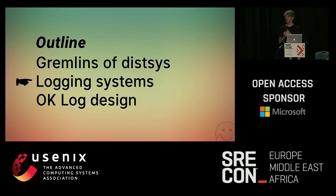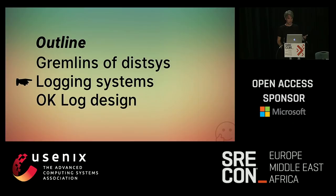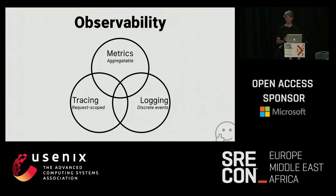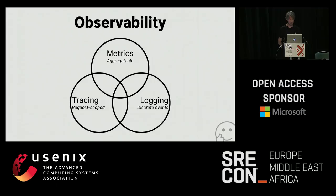Distributed systems are hard. Let's get more concrete and talk about logging systems. I think we like to shoehorn a lot of concerns into the logging bucket, and that's not typically very useful. I prefer to use observability as the umbrella term. Observability for me is the union of three things: metrics, logging, and tracing. Their key properties are, respectively, that metrics are aggregatable, logging deals with discrete events, and tracing — distributed tracing — deals with request-scoped stuff.